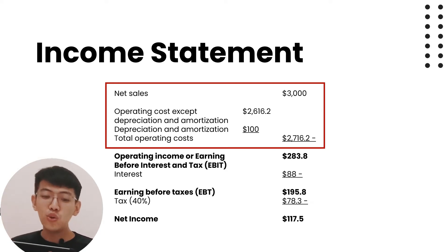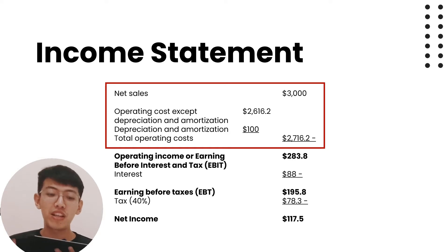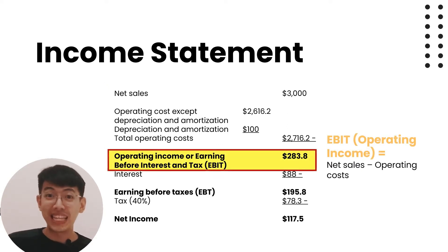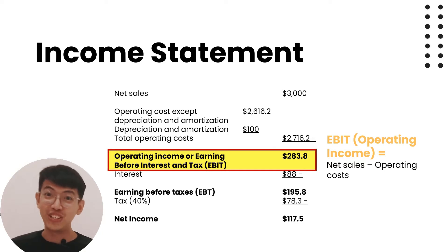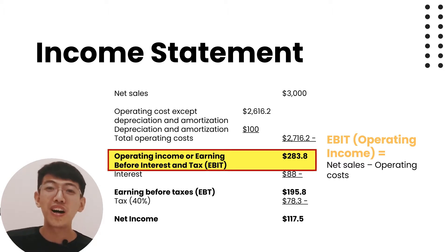The operating cost including depreciation and amortization is two thousand six hundred sixteen point two plus one hundred dollars, equals two thousand seven hundred and sixteen point two dollars. From these two we can find operating income, or EBIT (Earnings Before Interest and Tax), by subtracting revenue from operating cost. So three thousand dollars minus two thousand seven hundred sixteen point two dollars equals two hundred eighty-three point eight dollars.